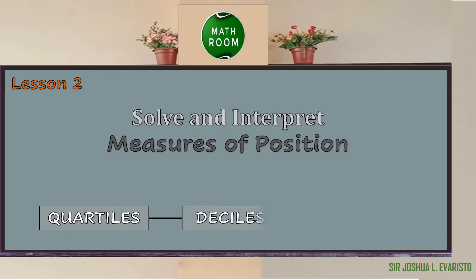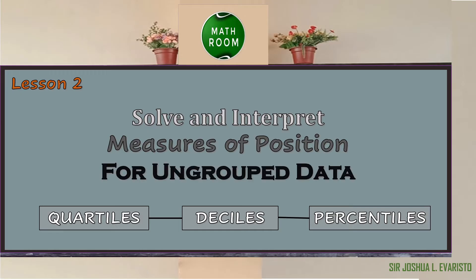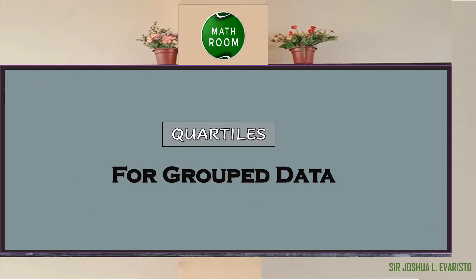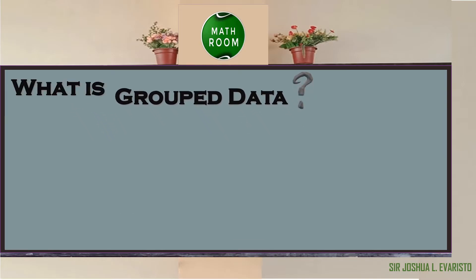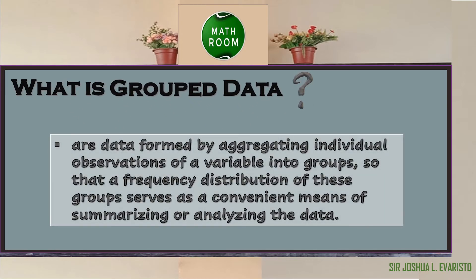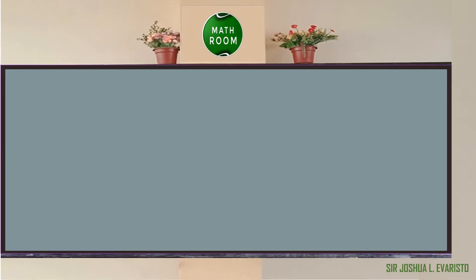Let's get started. In our previous lesson, we learned how to solve and interpret measures of position such as quartiles, deciles, and percentiles for ungrouped data. Now we're going to discuss how to solve and interpret quartiles for grouped data. But first, what is grouped data? Grouped data are data formed by aggregating individual observations of a variable into groups.